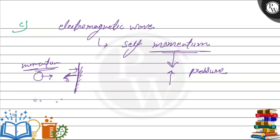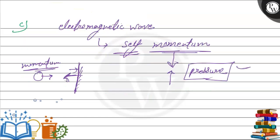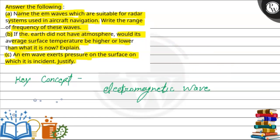Therefore, we say that the electromagnetic wave has self-momentum, which is why it exerts pressure on the surface. This is the justification for Part C. So this is the solution to options A, B, and C. Thank you.